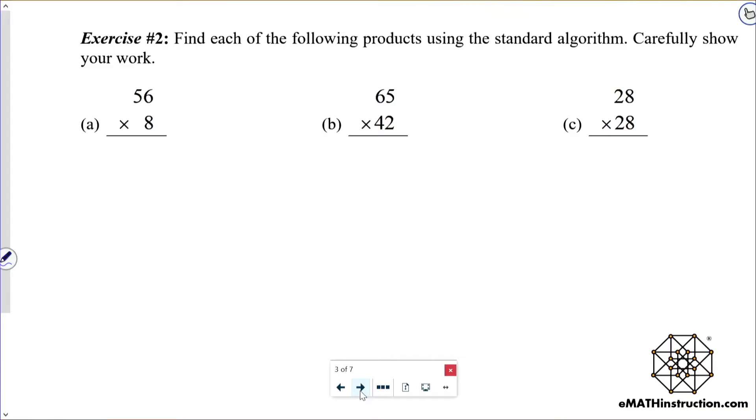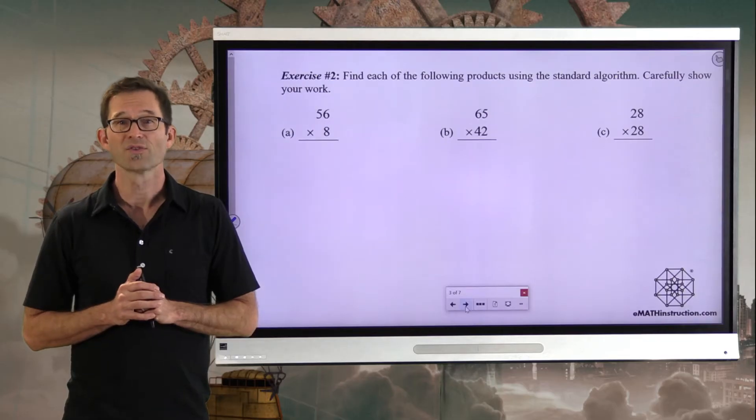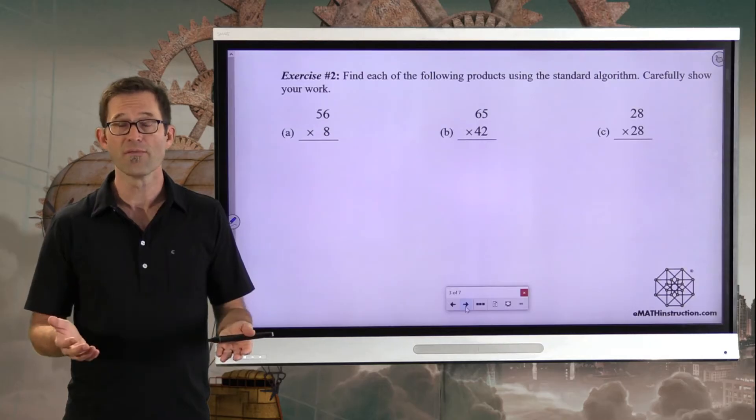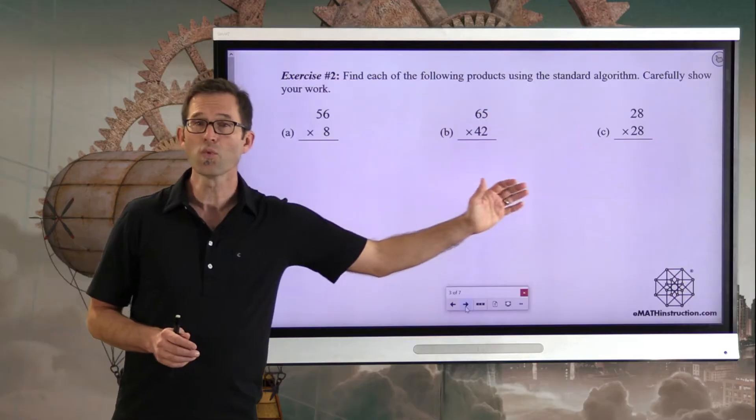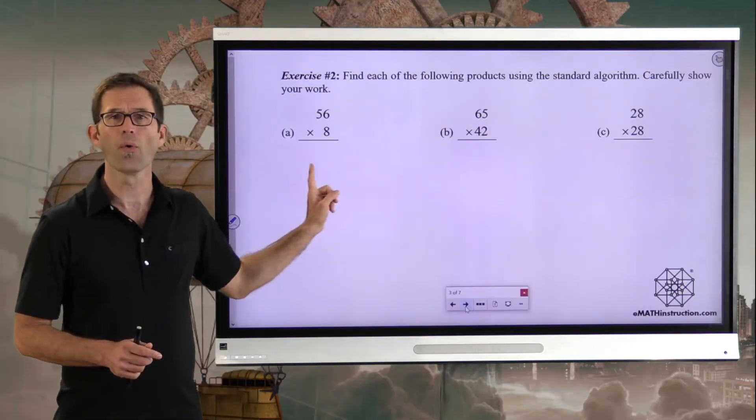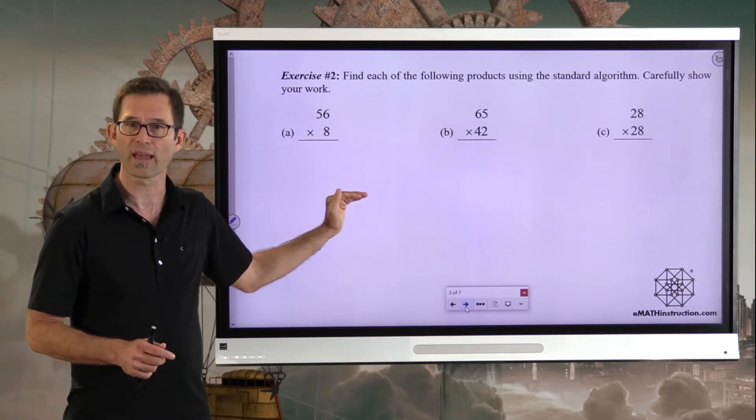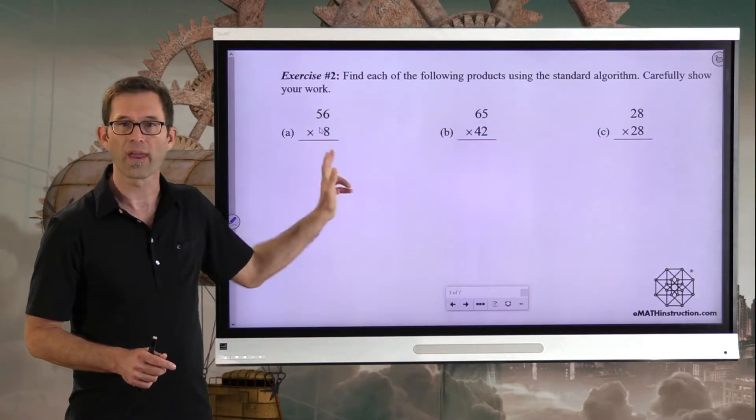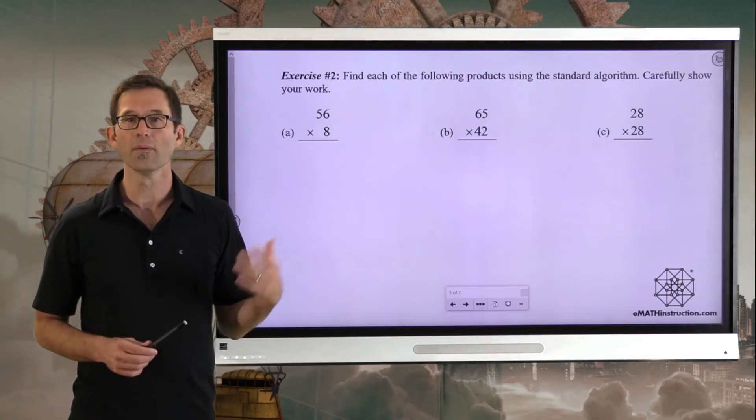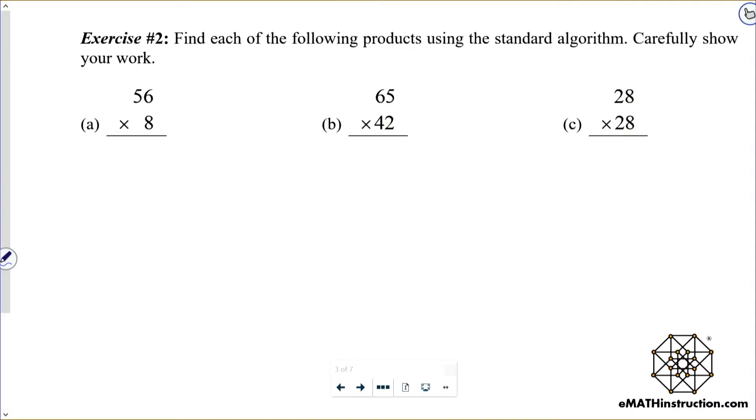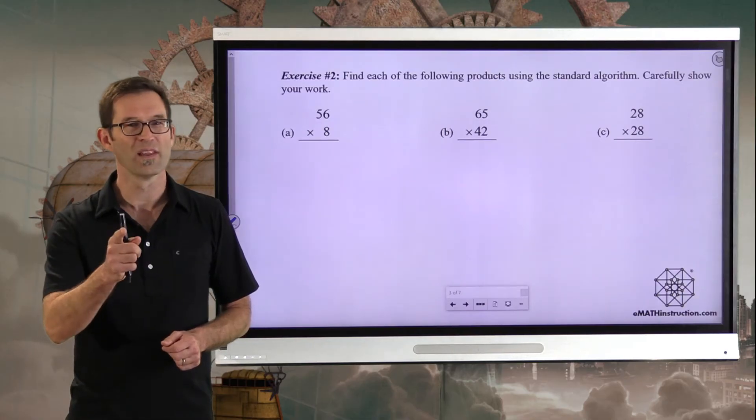Let's review this algorithm some more in the next problem. Exercise 2: Find each of the following products using the standard algorithm. Carefully show your work. What I'd like you to do is pause the video for maybe about 5, 10 minutes, as long as you need. Work through each one of these. This first one, because we're only multiplying by 8, we're never going to have to do that second row. We're going to have to do a little carrying, but we won't have to do any kind of second row.